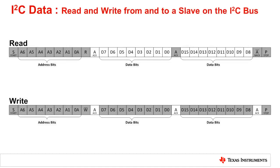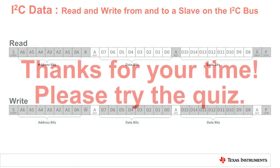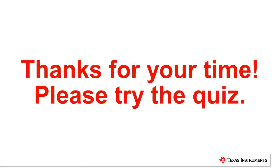These two patterns represent the most basic of read and write transactions between a master and a slave. More complicated read-write transactions or patterns are covered in the I2C Example Read-Write for Internal Registers training video. That concludes this video. Thank you for watching. Please try the quiz to check your understanding of this video's content.